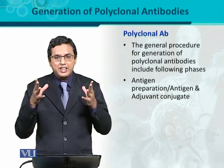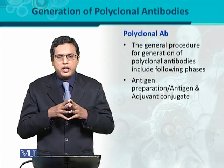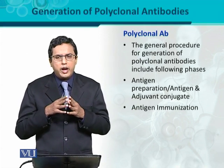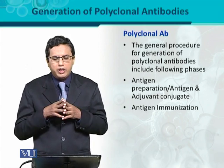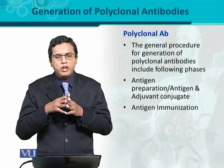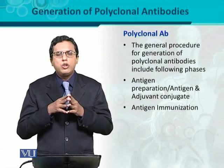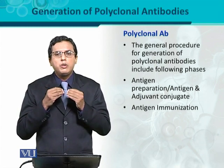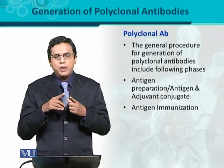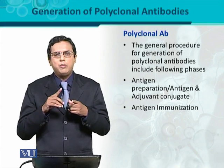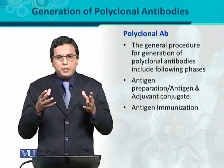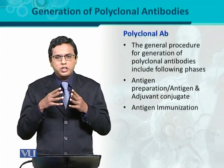Adjuvants stimulate the immune system in a more enhanced manner so that the antibody response is elevated. Another important phase is antigen immunization — the prepared antigen, or the antigen-adjuvant conjugate, is used to immunize an animal. That animal is a mammal; it can be mice, rabbit, sheep, or horse, depending on the availability and demand for antibody production.